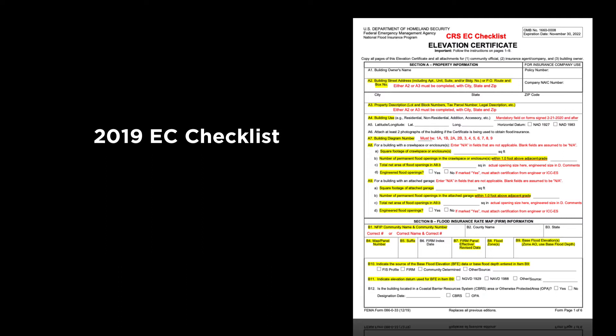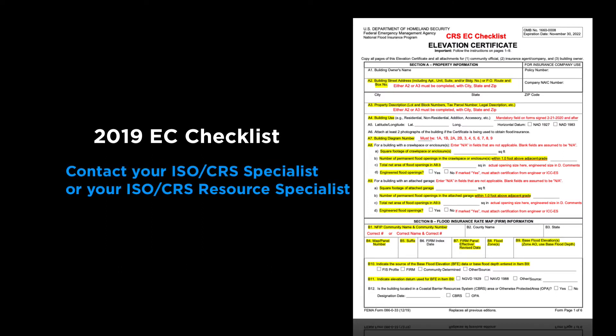We are concerned with all fields that affect the insurance rating of a building, and all fields that tell us whether a building is NFIP compliant or not. The best way to learn that is to go through those five training videos. Short of that, we have created a cheat sheet — what we call the EC Checklist — that shows you each field we check on the EC along with comments about what's acceptable in a few spots. You can obtain checklists for the 2019, 2015, and 2012 EC forms by contacting your ISO CRS Specialist or CRS Resource Specialist. All four pages of the form are shown along with the fields we check for CRS purposes.